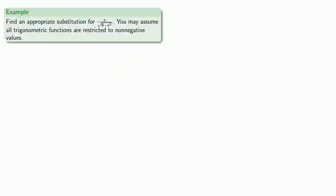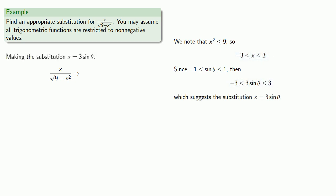So let's try to find an appropriate substitution for x divided by square root 9 minus x squared. And we may assume that all trigonometric functions are restricted to non-negative values. So if we look at our radicand, square root 9 minus x squared, we note that x squared has to be less than or equal to 9. And we won't worry about the fact that it's in the denominator. We'll focus on the radicand itself. That means that x has to be between negative 3 and 3. Now we know that sine and, to be sure, cosine are limited in this way. And since sine has to be between negative 1 and 1, then 3 sine of theta is between negative 3 and 3, which is exactly what we want x to do. And so this suggests the substitution x equal to 3 sine theta.